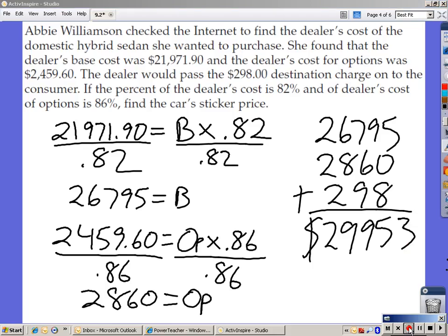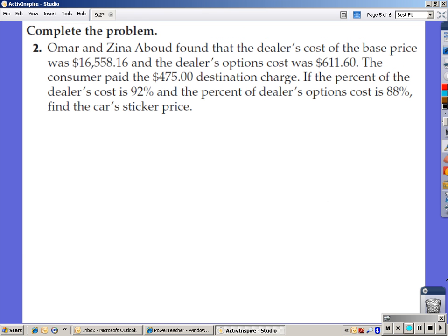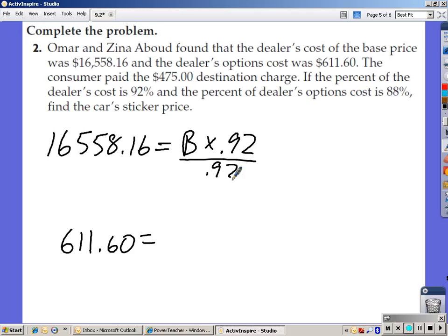Let's take a look at number 2 on your homework. Press pause, try this on your own, press play to resume. Omar and Zena found that the dealer's cost of the base price was $16,558.16. The dealer's options cost was $611.60. The consumer paid the $475 destination charge. If the percent of the dealer's cost is 92%, so B times .92, divide both sides by .92. $16,558.16 divided by .92 is $17,998, our base price.